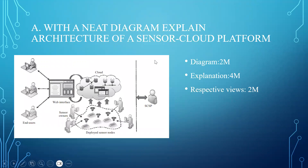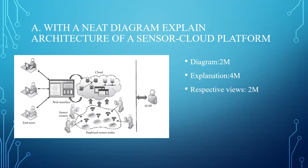The OR choice: with a neat diagram, explain the architecture of the sensor cloud platform. Draw the diagram first — the diagram has 2 marks. You can start explaining about the end user, web interface, sensor owners, deployed sensor nodes, and cloud — that explanation will consist of 4 marks. You will also be writing about the respective views, such as from the sensor point of view or the customer point of view, how the platform will function — those views will have 2 marks. Totally you can write it for 8 marks.